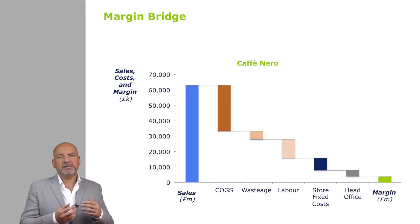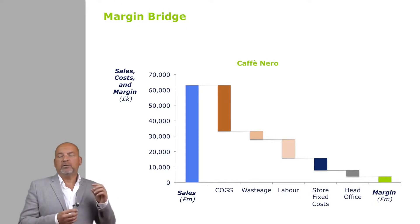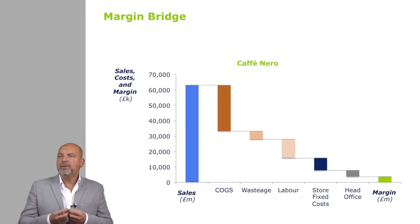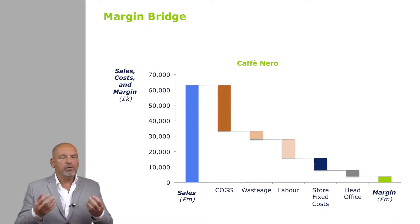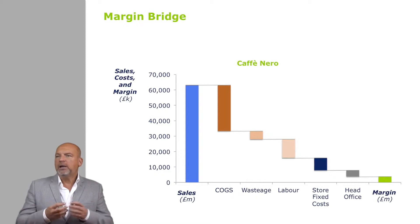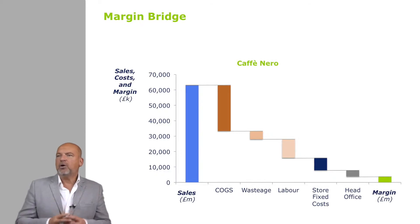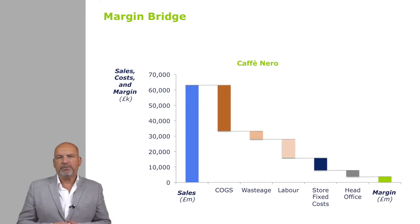What you see here is how COGS and labor are really the big costs. Wastage and labor might be the ones you can act on internally, while COGS might be ones for the buying department.